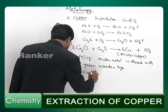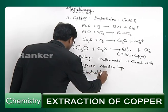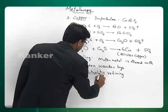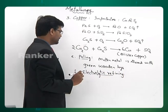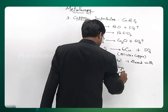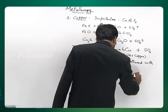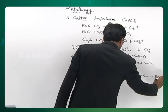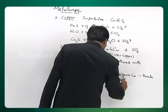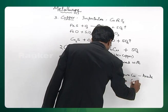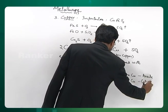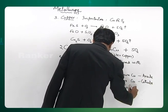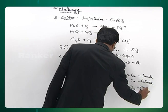Finally, the fifth stage is electrolytic refining. In electrolytic refining, impure copper acts as the anode, pure copper acts as the cathode, and aqueous copper sulphate is the electrolyte.